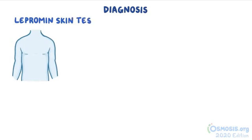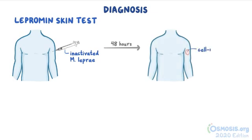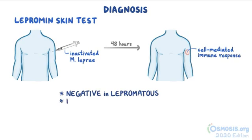A lepromin skin test might be done to determine what type of leprosy a person has. This is when an extract of inactivated M. leprae is injected intradermally, and if an induration appears after 48 hours, it means that there's a cell-mediated immune response against the organism. So this test is negative in the lepromatous form and positive in the tuberculoid form.